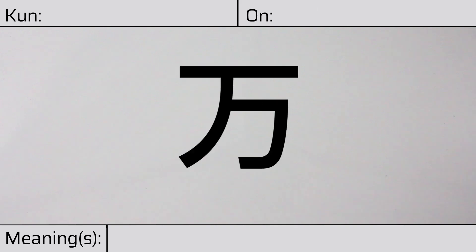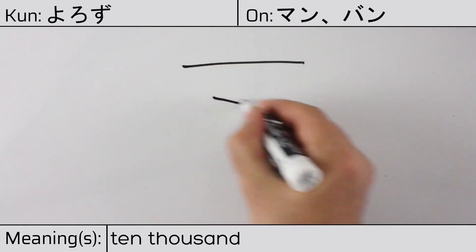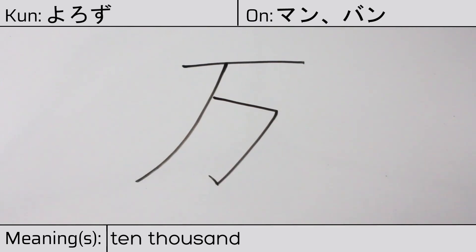Welcome to this lesson on Japanese kanji. Today, we'll be discussing this character. This kanji has a kunyomi or Japanese reading of yorozu, and it has onyomi or Chinese readings of man or ban. This character has the meanings ten thousand. Here is the stroke order. This character is made up of the following radicals.